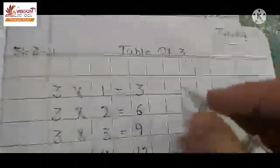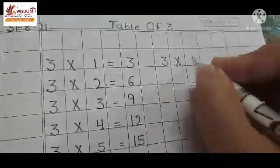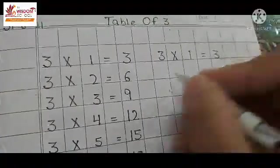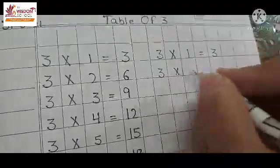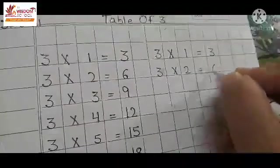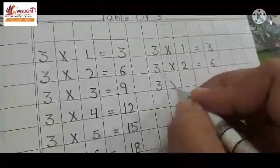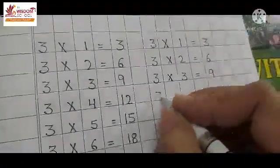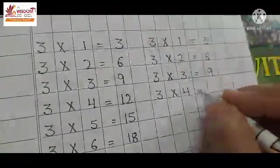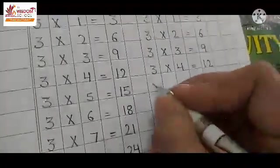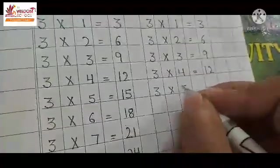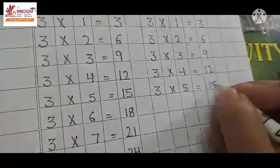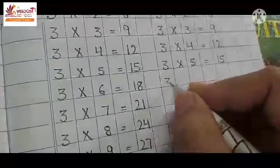Once again. 3 times 4 is 12. 3 times 5 is 15. 3 times 6 is 18.